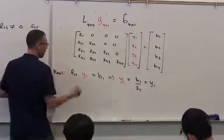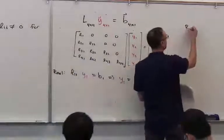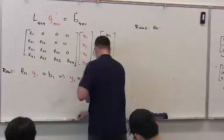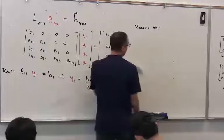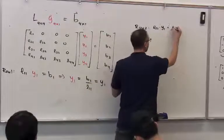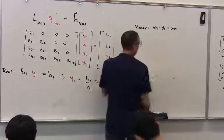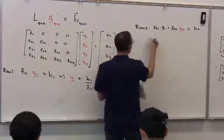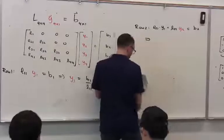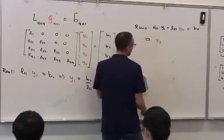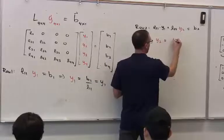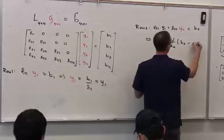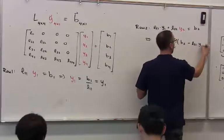Yeah, so we started with row 1, then we go to row 2. What was row 2 there? L21 known value Y1 plus L22 unknown value Y2. Whole thing is supposed to be equal to B2. What does that immediately imply about Y2? This is going to be 1 over L22 times B2 minus L21Y1.